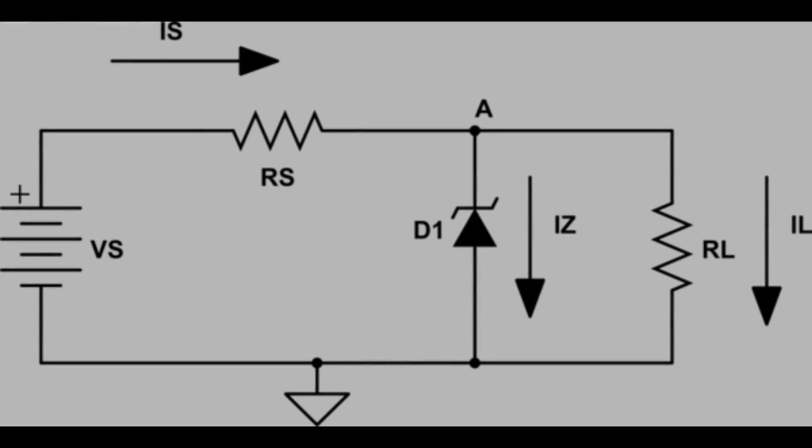This is a zener diode regulator. Zener diode will have a breakdown voltage. Let us say it is 5.1 volt. The Vs should be more than 5.1, or 10 volt. So the current will flow through Rs and D1, and then voltage across D1 will always be 5.1 volt, irrespective of the voltage at Vs.